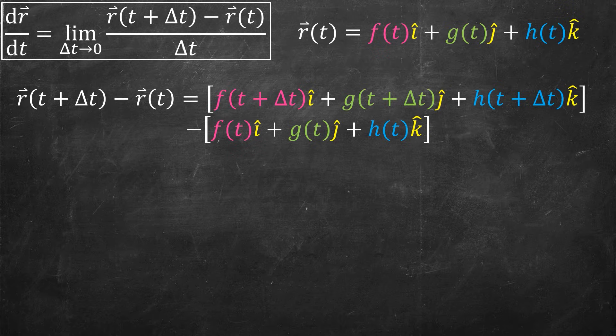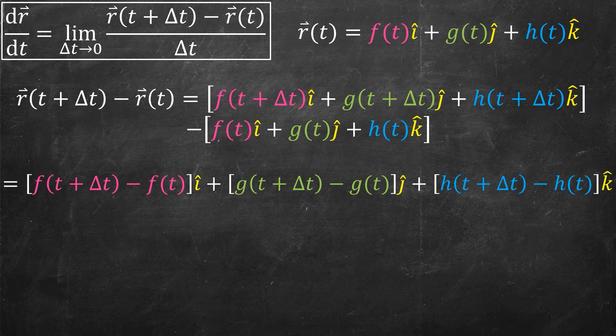Then I can rearrange a little bit. So I'm going to put all the stuff with f together, and that's going to form f of t plus delta t minus f of t, all of that in the i-hat direction. Then I put the green g of t stuff together. That's in the j-hat direction.